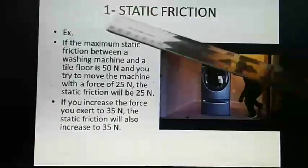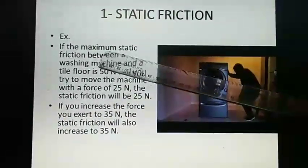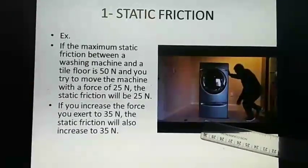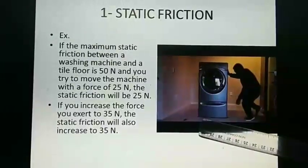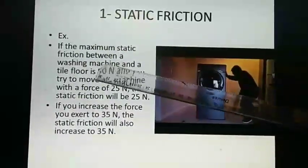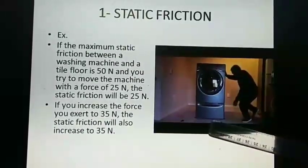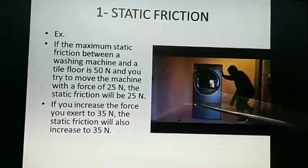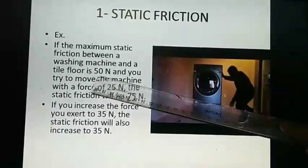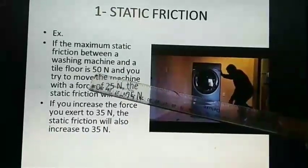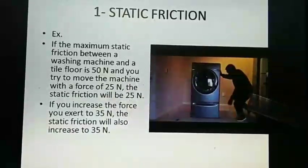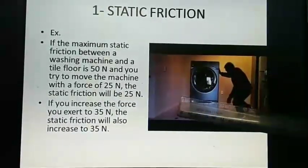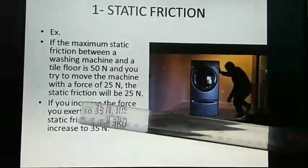Now we will take an example to understand static friction. The maximum static friction between a washing machine and a tile floor is 50 Newton. If we have to move the machine, the applied force must overcome this static friction of 50 N. If the man applies a force of only 25 Newton, it is not sufficient to move the washing machine.